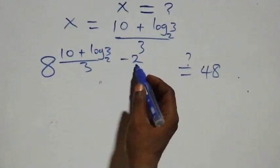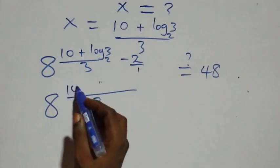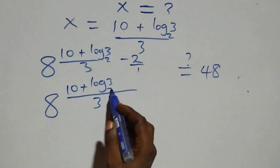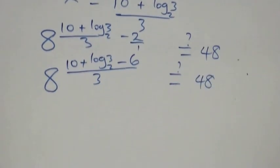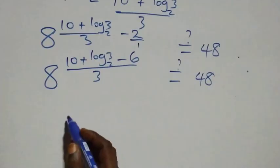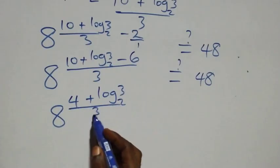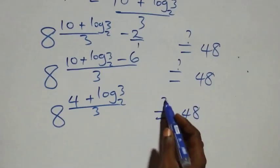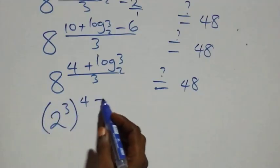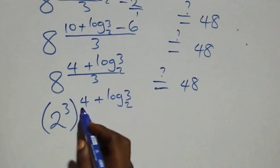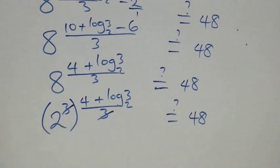Bringing the fraction together, the exponent becomes ten plus log three base two over three, minus two. Converting two to sixths gives six over three, so the exponent becomes ten minus six plus log three base two, all over three, which simplifies to four plus log three base two, all over three.